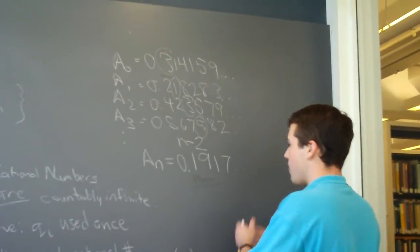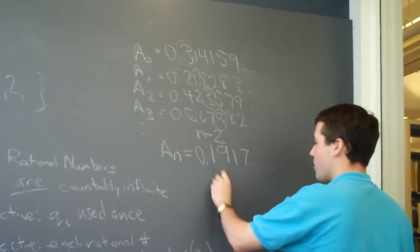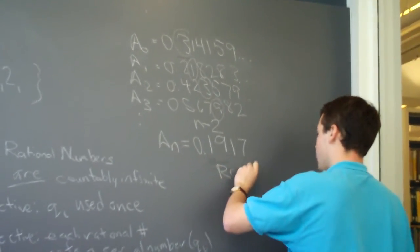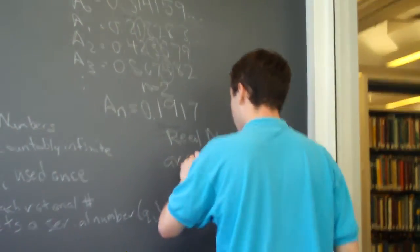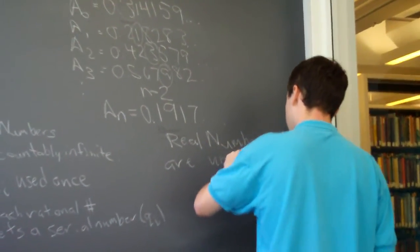Thus, we have created a decimal that is not on our list, and the real numbers are therefore uncountably infinite.